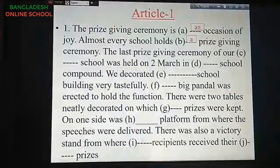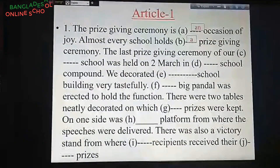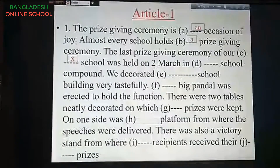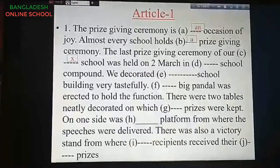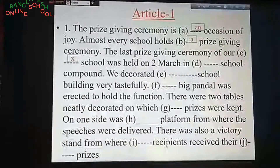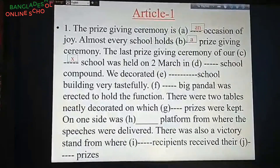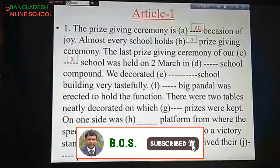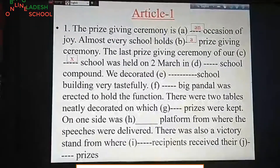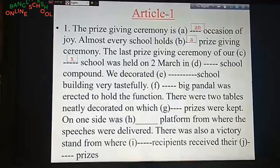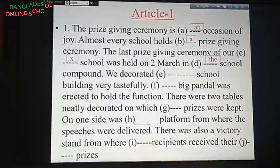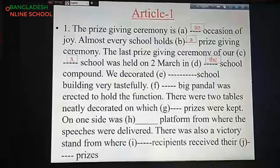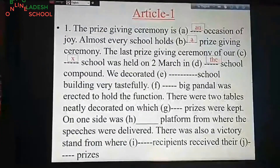For blank C: 'The last prize giving ceremony of our [dash] school' — here a cross is used, because between a possessive pronoun and a noun there is no article. 'Our' is possessive and 'school' is the noun, so no article is placed there. For blank D: 'on 2nd March in [dash] school compound' — here 'the' is used, because in this gap it reads 'in our school compound,' and instead of the possessive 'our,' 'the' is used.